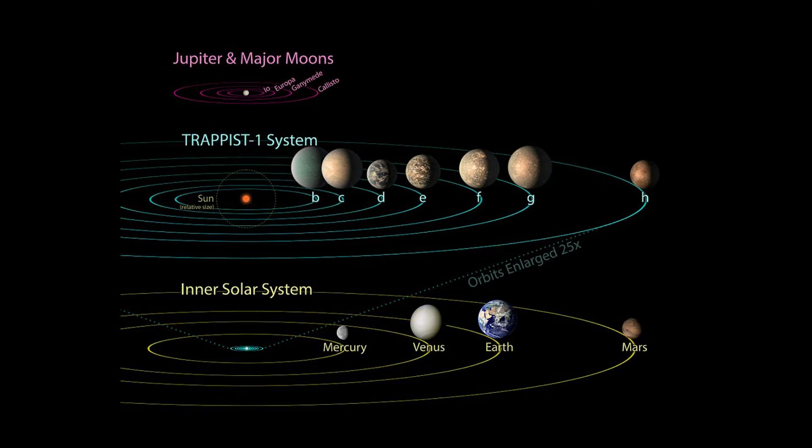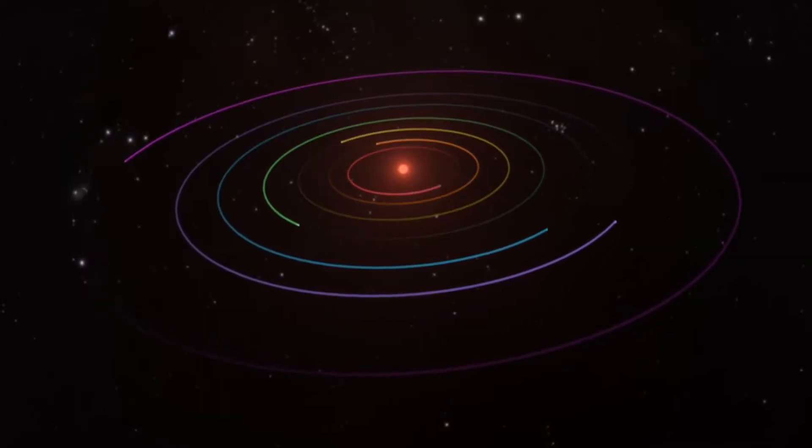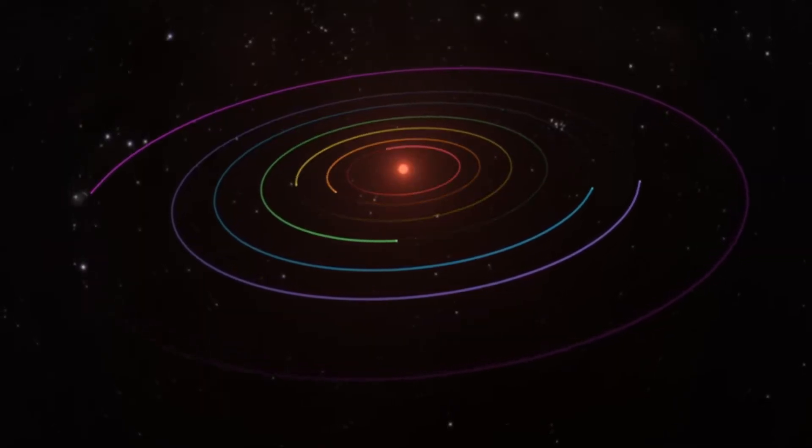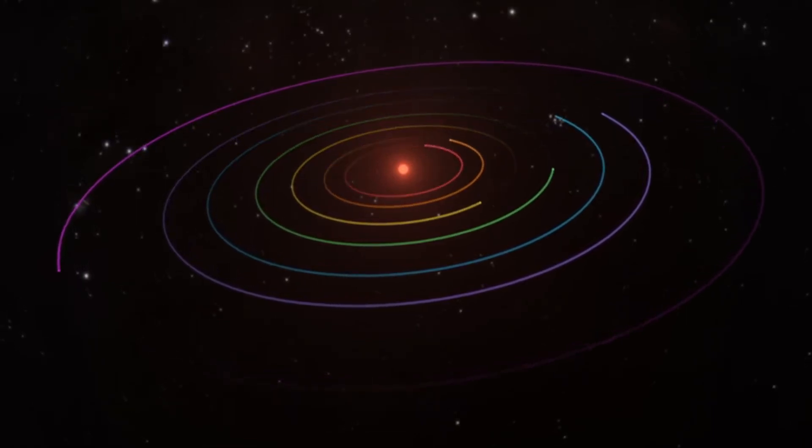The total mass of the six inner planets is approximately 0.02 percent the mass of TRAPPIST-1, a fraction similar to that for the Galilean satellites to Jupiter, an observation suggestive of a similar formation history. The densities of the planets range from 0.60 to 1.17 times that of Earth, indicating predominantly rocky compositions.